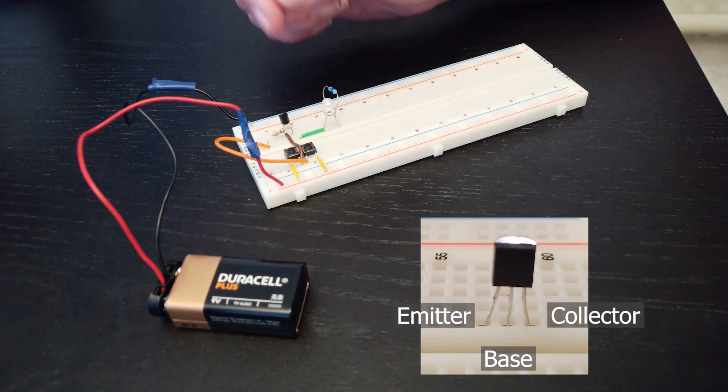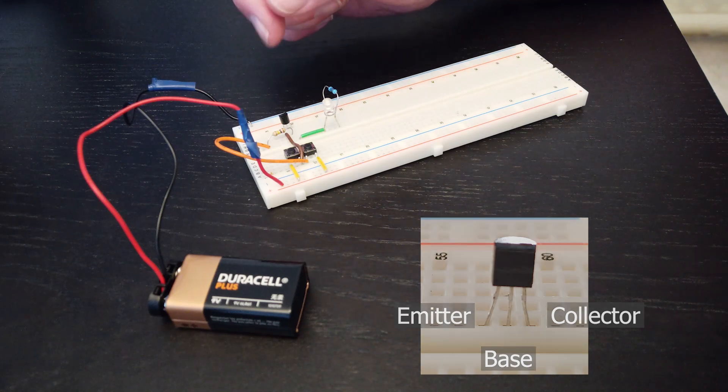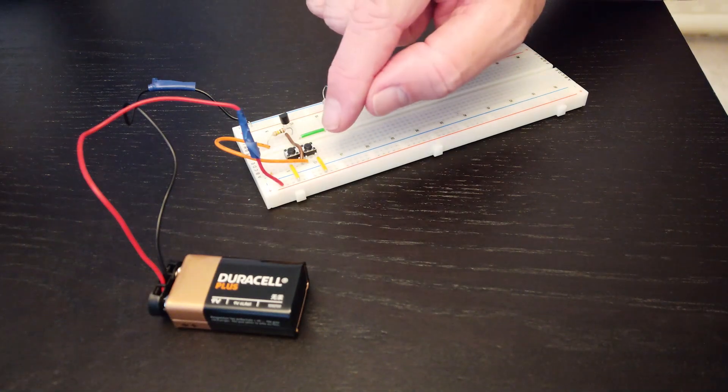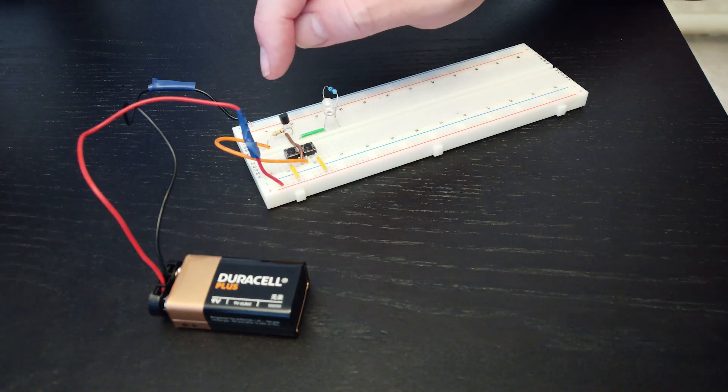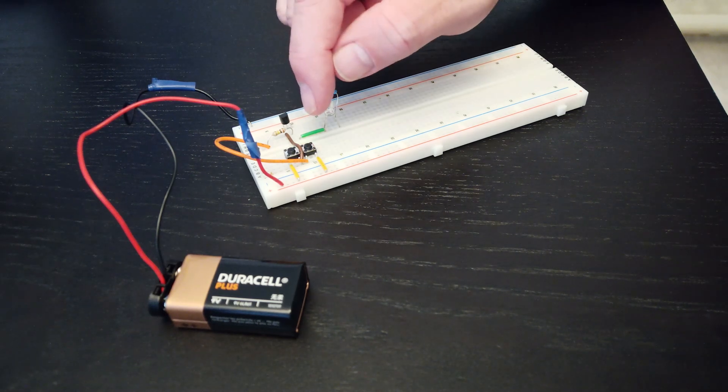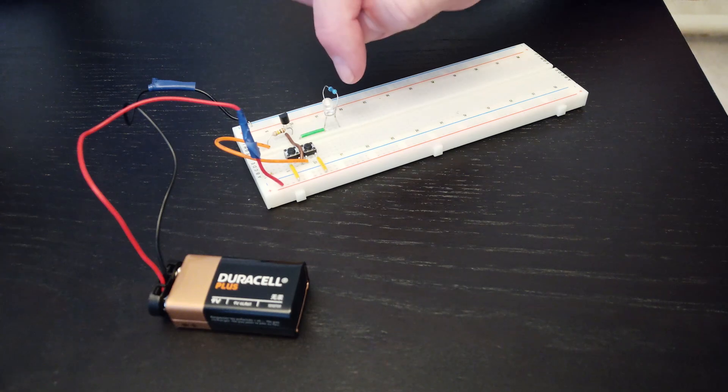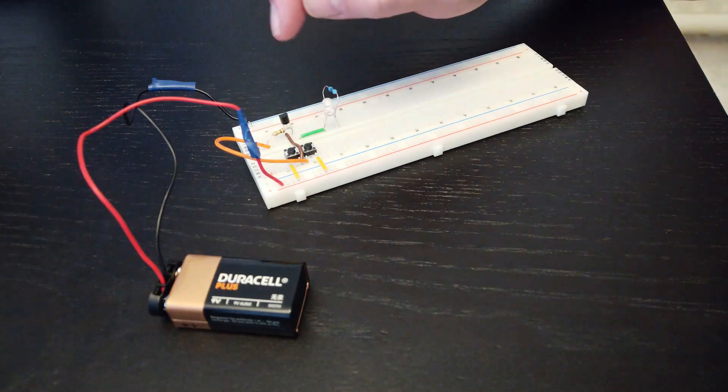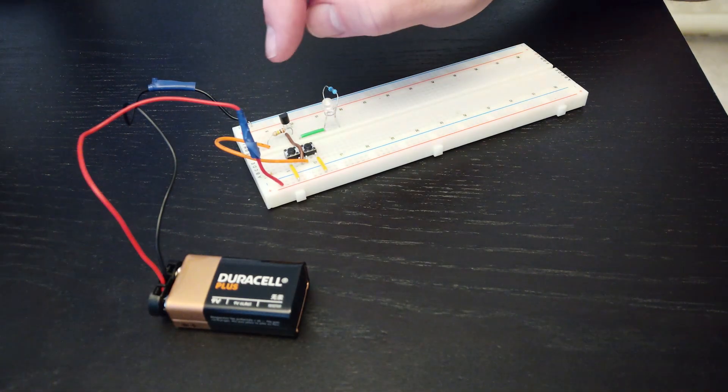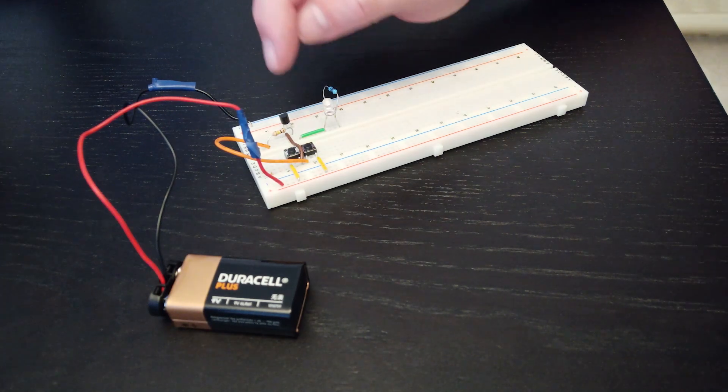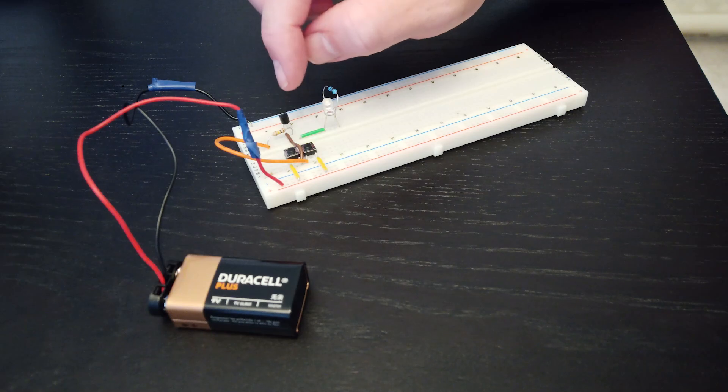With an NPN transistor, when a positive voltage is applied to the base, then current is allowed to flow from the collector to the emitter. If there's no positive voltage at the base then current will not be allowed to flow. The way this circuit is wired up we've got two buttons. The top button basically supplies power to the collector, and then from the emitter of the transistor we go through an LED, through a current limiting resistor back to the negative side of the circuit.